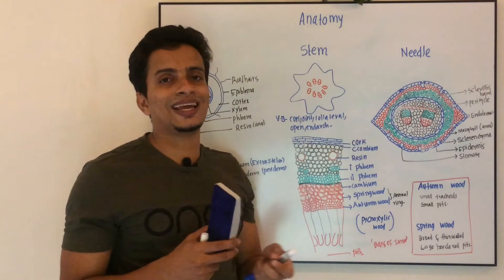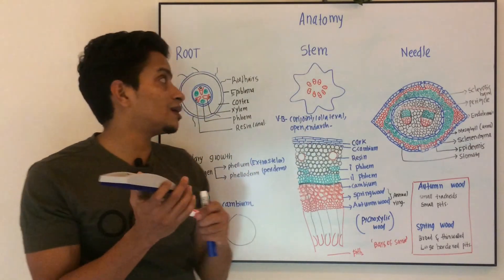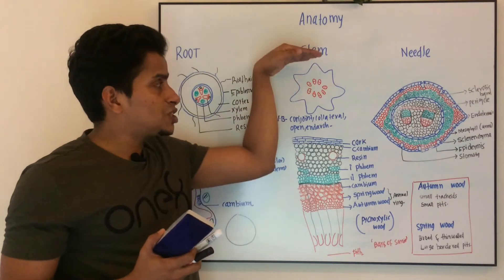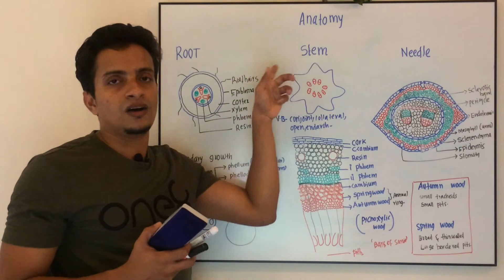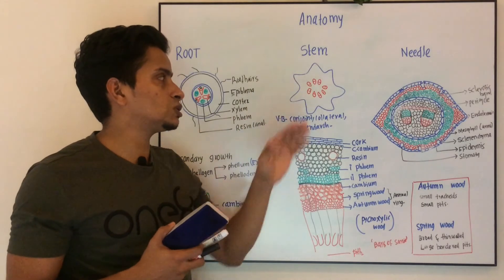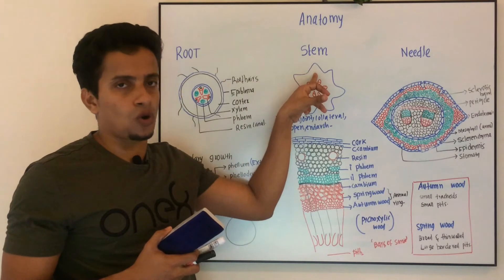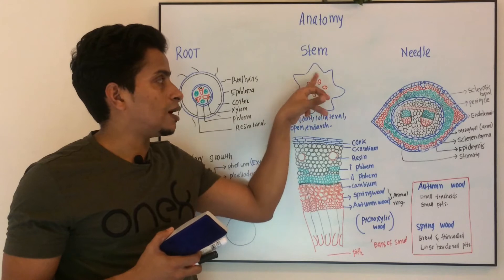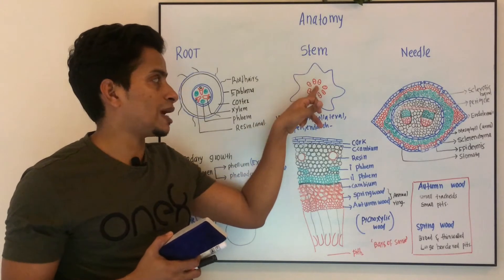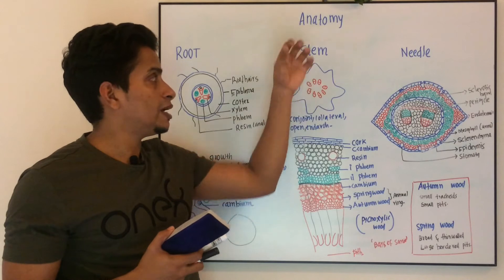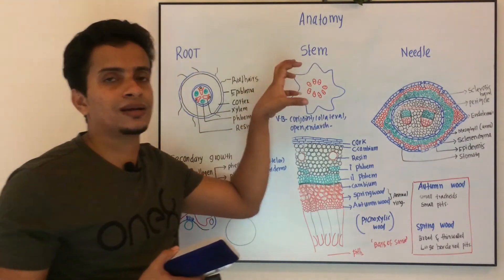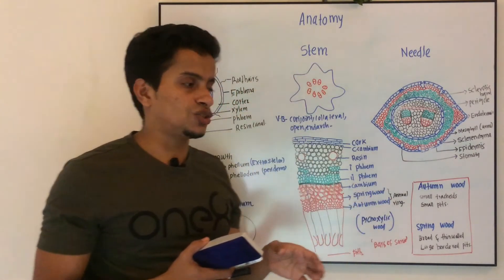Moving to the next section, that is the internal anatomy of the stem. In the young stem, it will be wavy in appearance with ridges and furrows. You can see a broad cortex and arrangement of vascular bundles in a ring-like structure. A pith can be seen in the younger one. This is the diagrammatic representation of the young stem.